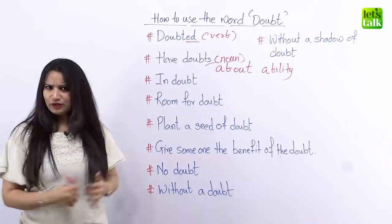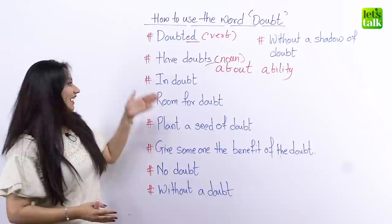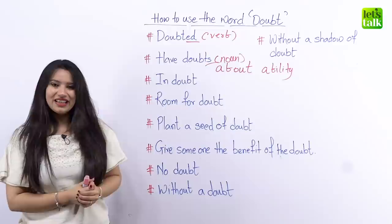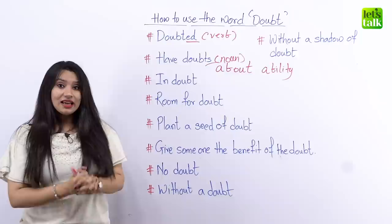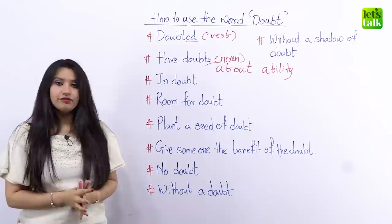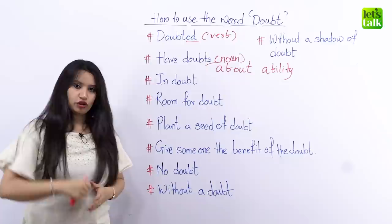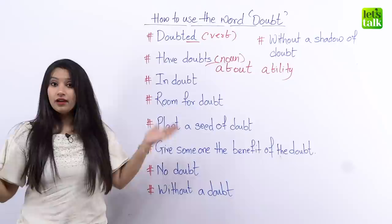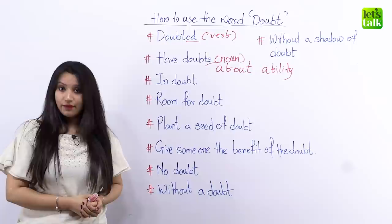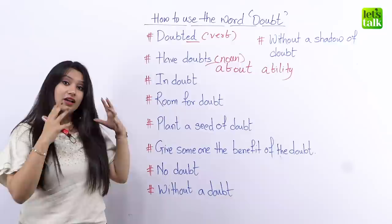Now let's look at the next phrase: 'in doubt.' When do we use 'in doubt'? It's used when there are some doubts about the success or future of something. For example, if you're talking about a company that's not performing well, you could say: 'The company's future is in doubt' — meaning there's a high possibility it might close down in the near future because of bad yearly revenue. So 'in doubt' is used to express future risk.